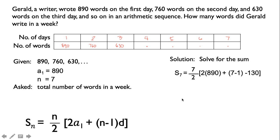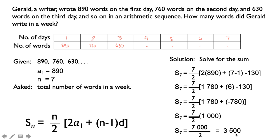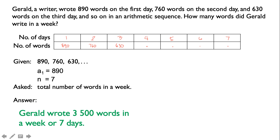Let us compute 2 times 890 first, which is 1780. Then 7 minus 1 is 6, and 6 times negative 130 is negative 780. Adding 1780 and negative 780 gives us 1000. Then we multiply 7 over 2 by 1000, giving us 7000 over 2. Our final answer is 3,500. Therefore, Gerald wrote 3,500 words in a week or 7 days.